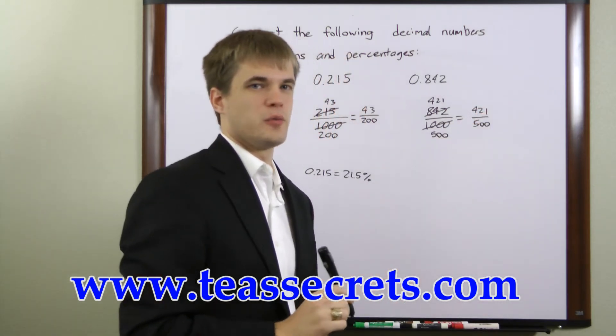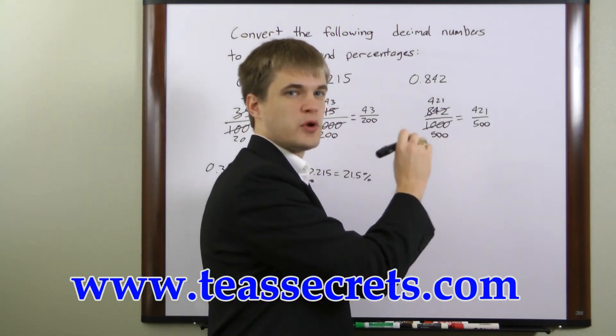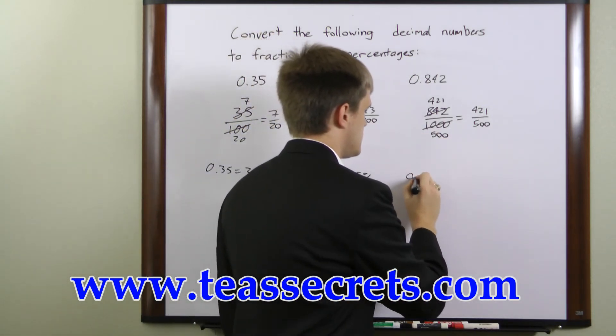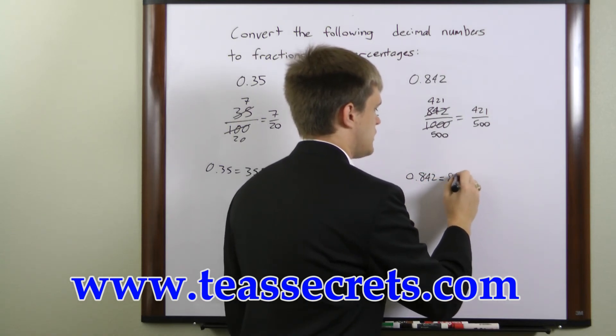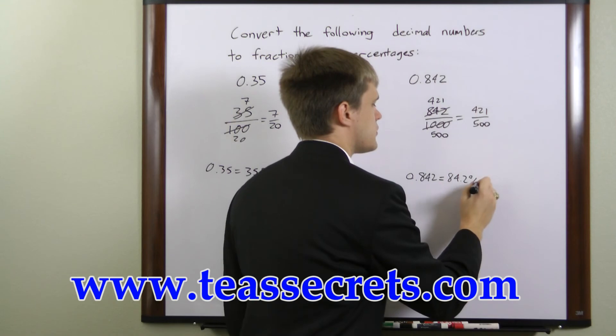To convert to a percentage, once again we'll just move the decimal point two places to the right, so 0.842 is equal to 84.2 percent.